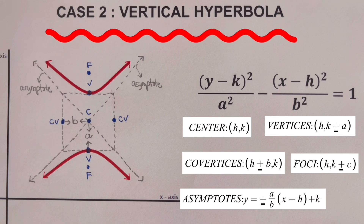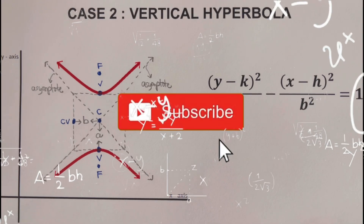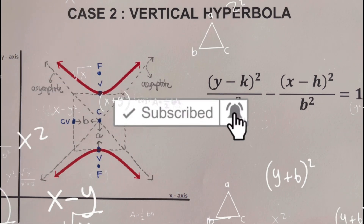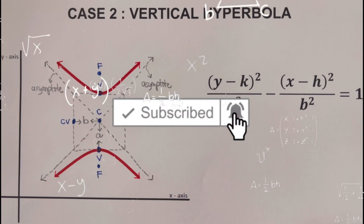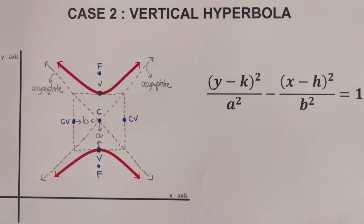These are the two cases for hyperbola. The first case is the horizontal hyperbola, while the second case is the vertical hyperbola. That's it! If you find this video helpful, consider subscribing and hitting the like button for more math videos. See ya!